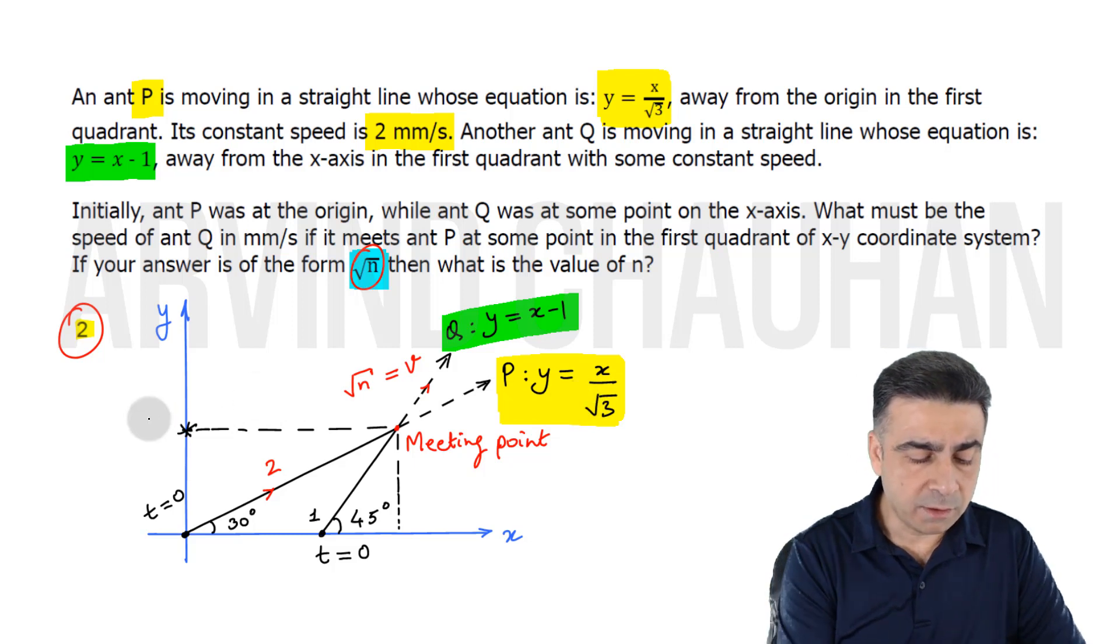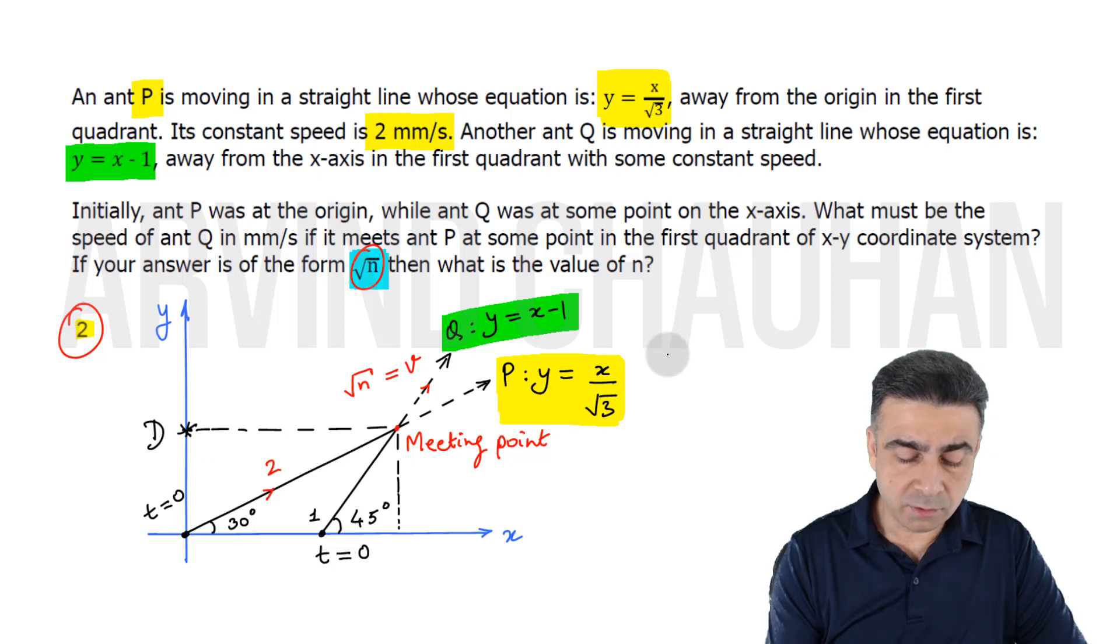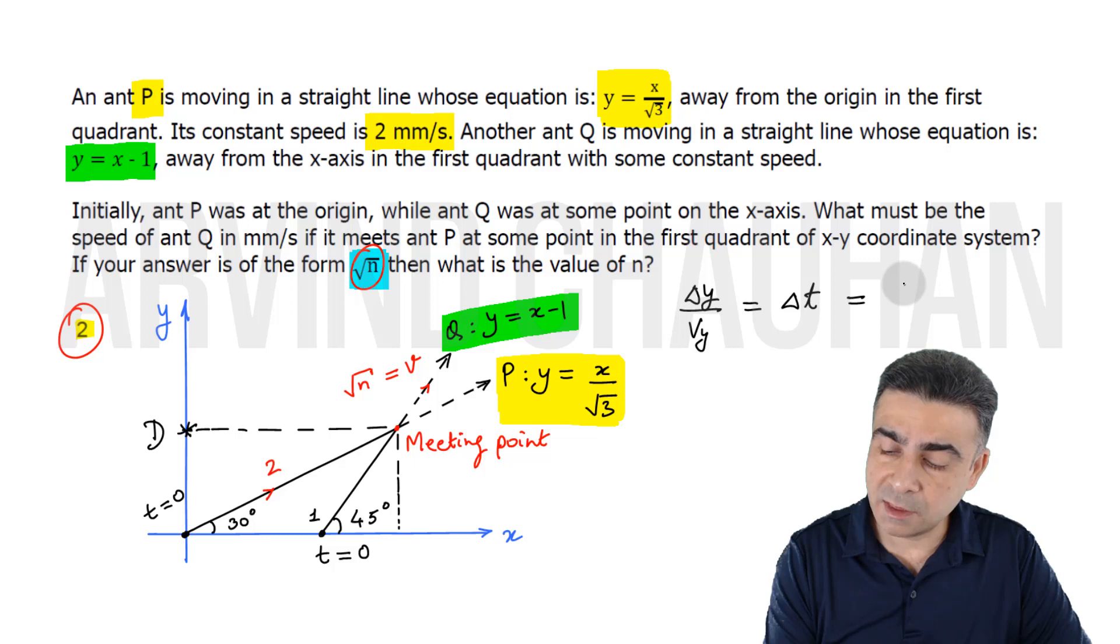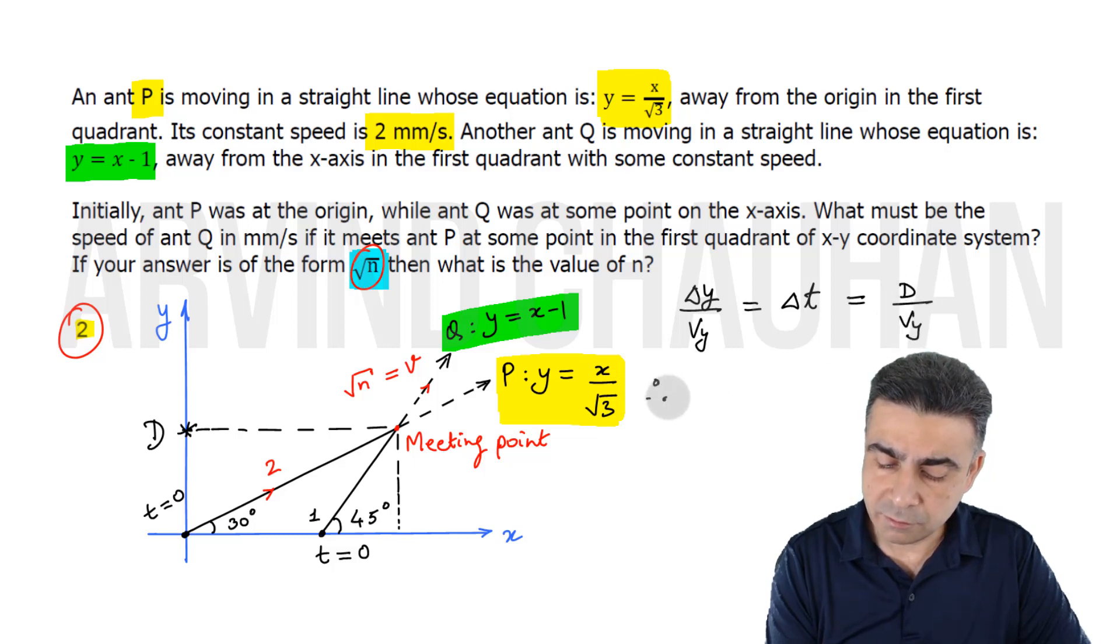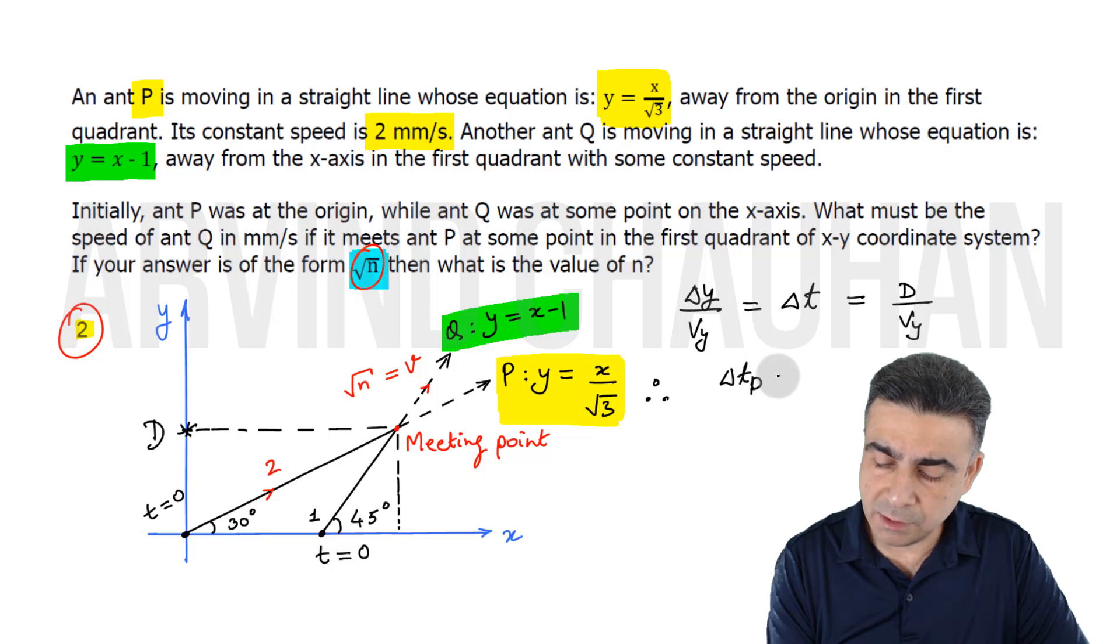At the final point, both have the same y-coordinate, let's call it capital D. That means delta y over Vy is the time spent by any ant. In both cases, delta y is capital D, so they must meet at the meeting point at the same moment. So delta t of P equals delta t of Q.